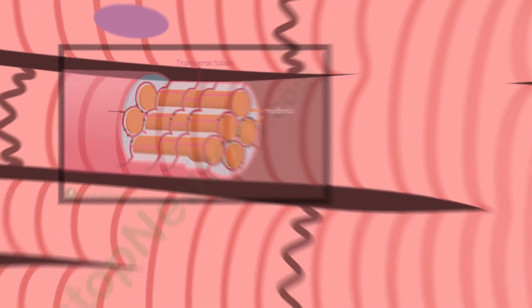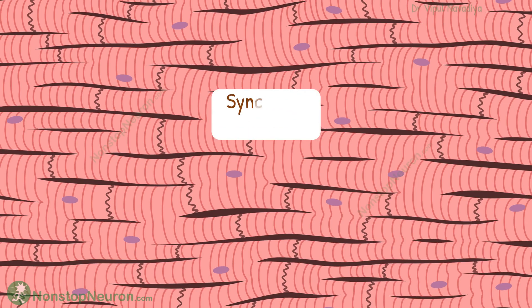So those were the similarities between skeletal muscle and cardiac muscle. Now there are some important differences as well. The main one is that the cardiac muscle is a syncytium — in simple words, all the muscle cells are so connected that they behave as a single unit. The reason is the strong connections between all myocytes at intercalated discs.